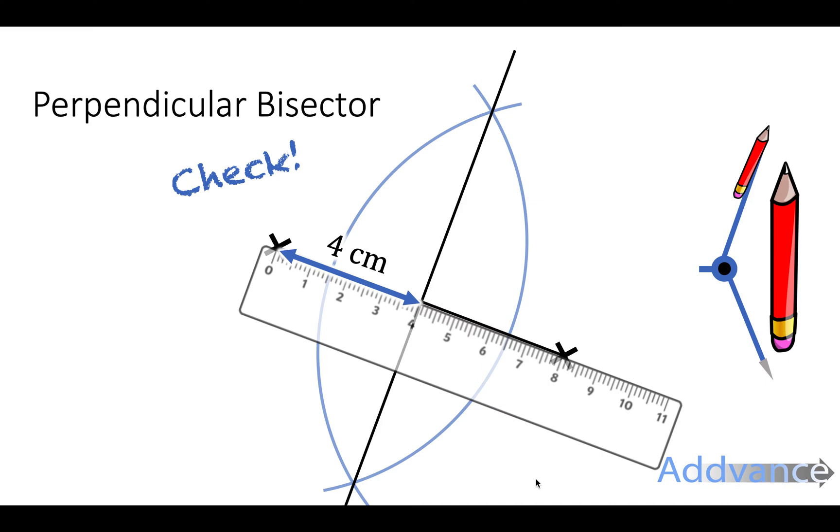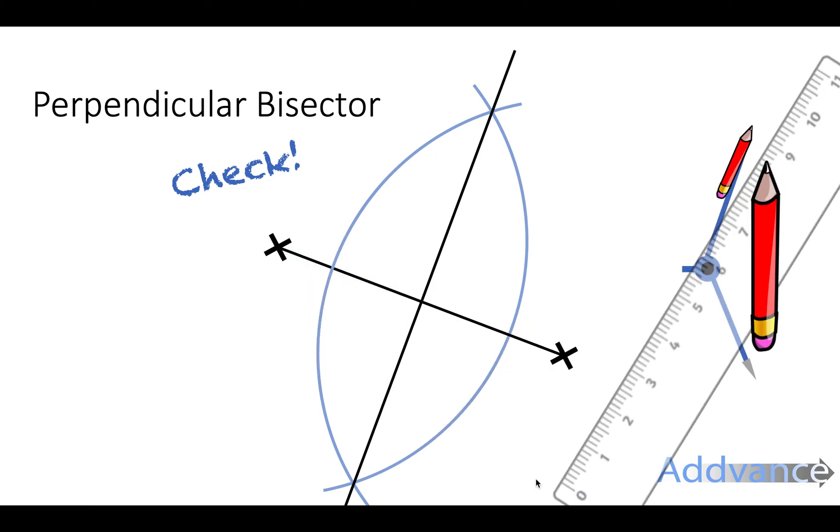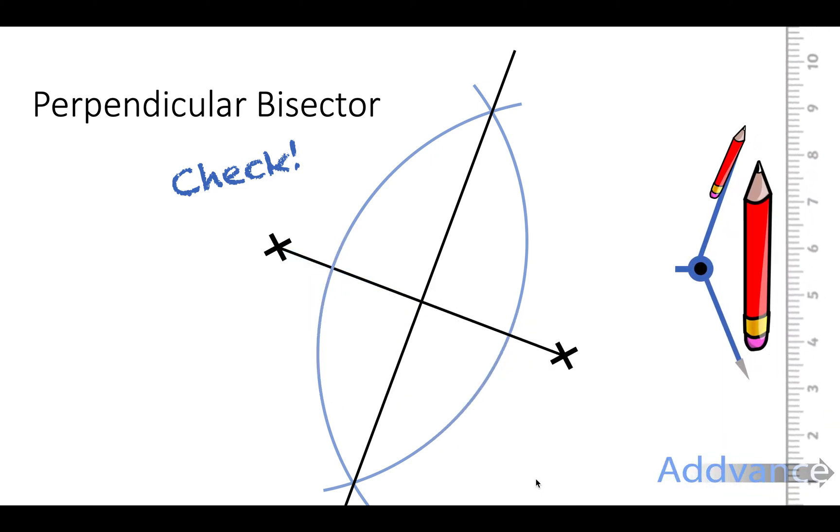This is a really simple way for you to check you've done it correctly in your exam. Measure the distance between the two points and then measure the distance between one of the points and the line to see it's halfway. Now you should also get a perpendicular angle here, that means a right angle. Perpendicular means right angle, so you can measure that angle as well to check it's a perpendicular line.